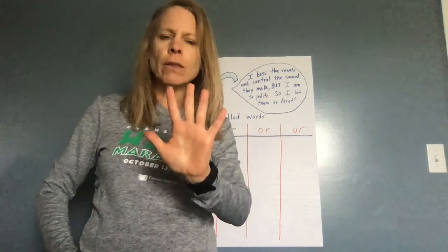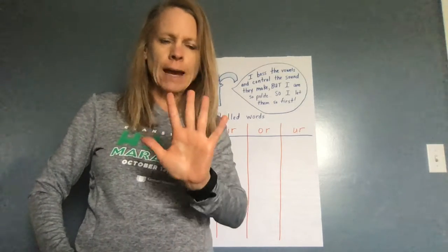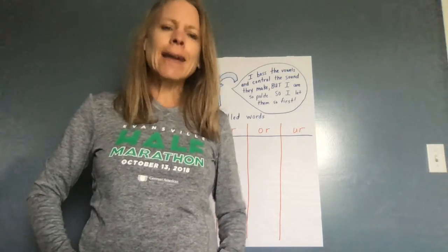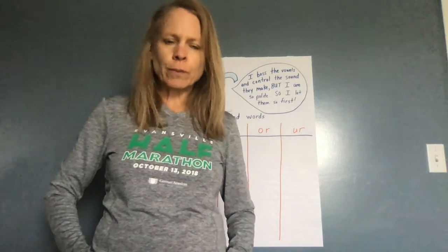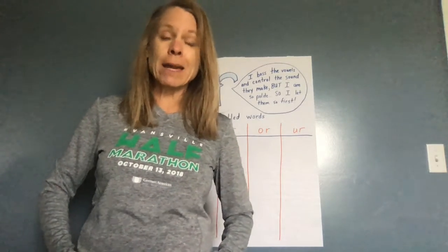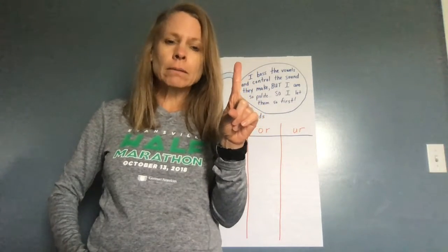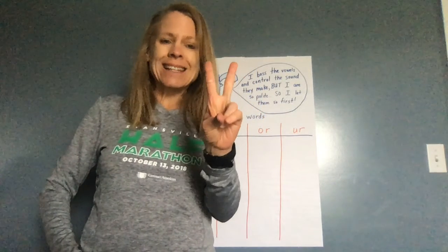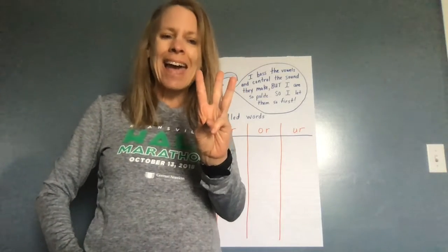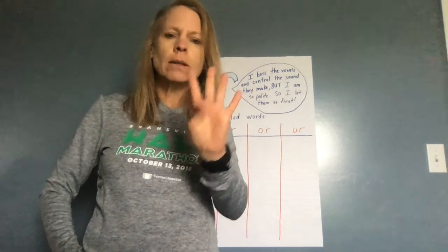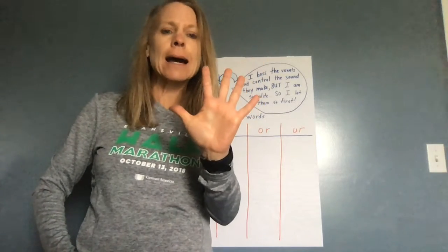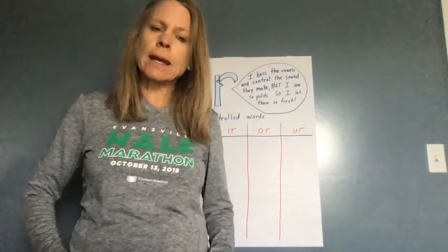Those are the five main vowels. We've talked about how they make a short sound. A says 'ah'. I says 'ih'. E says 'eh'. O says 'ah'. And U says 'uh'. So those are the short sounds.